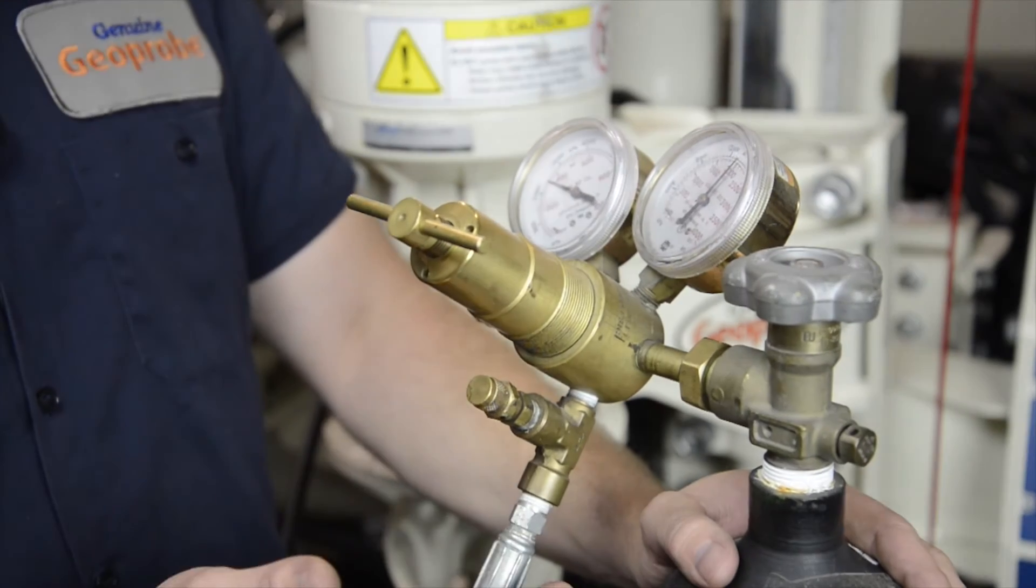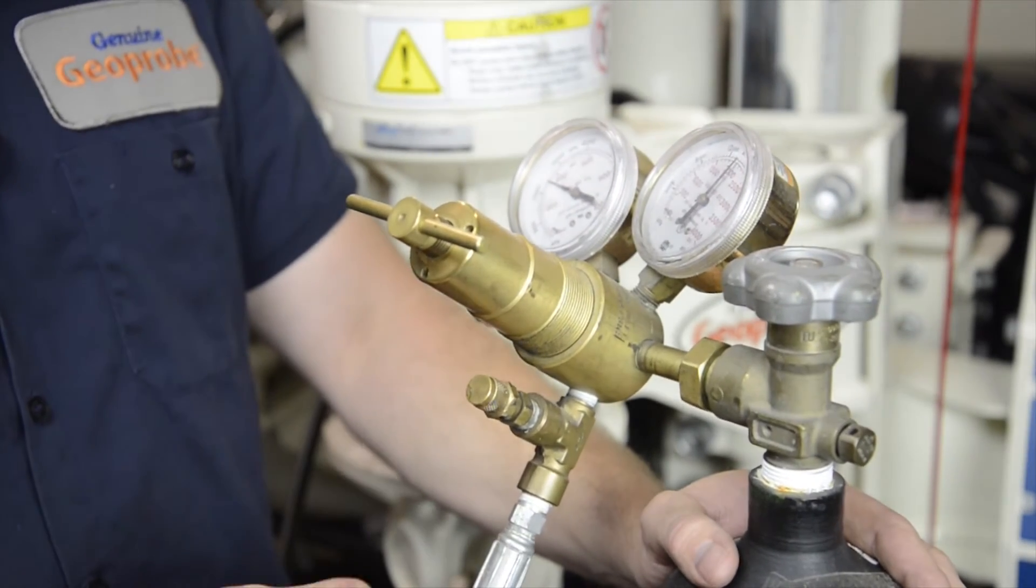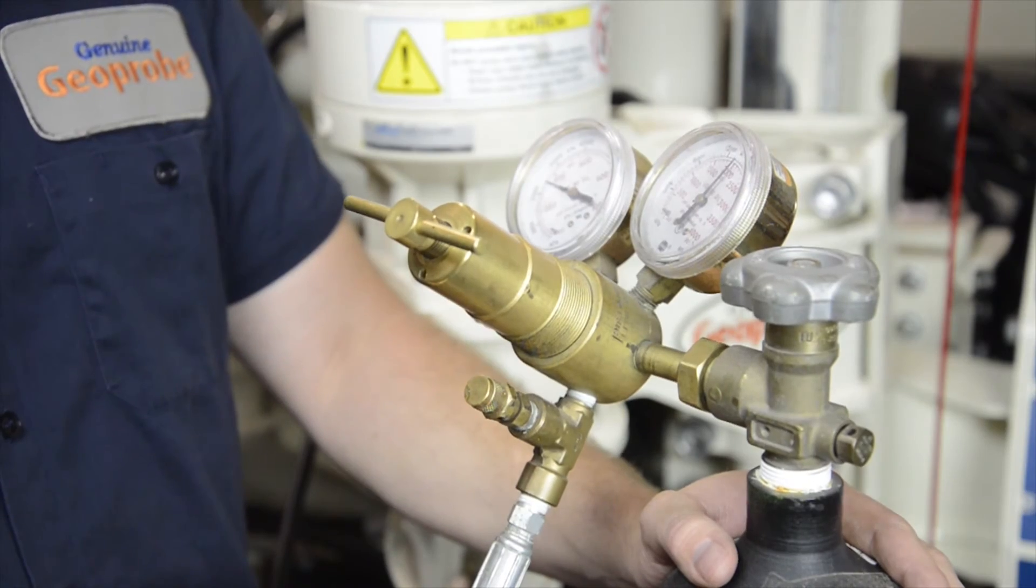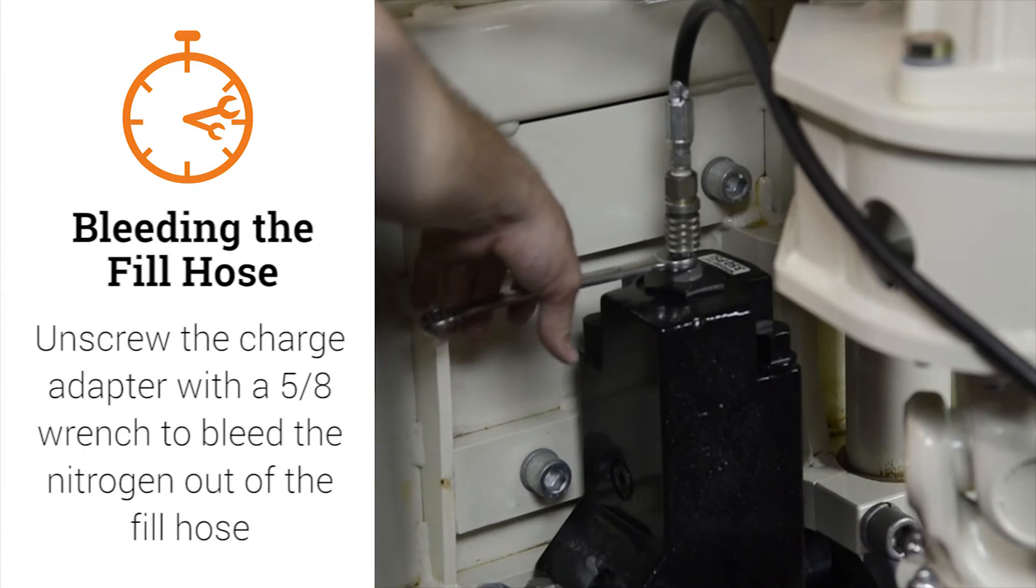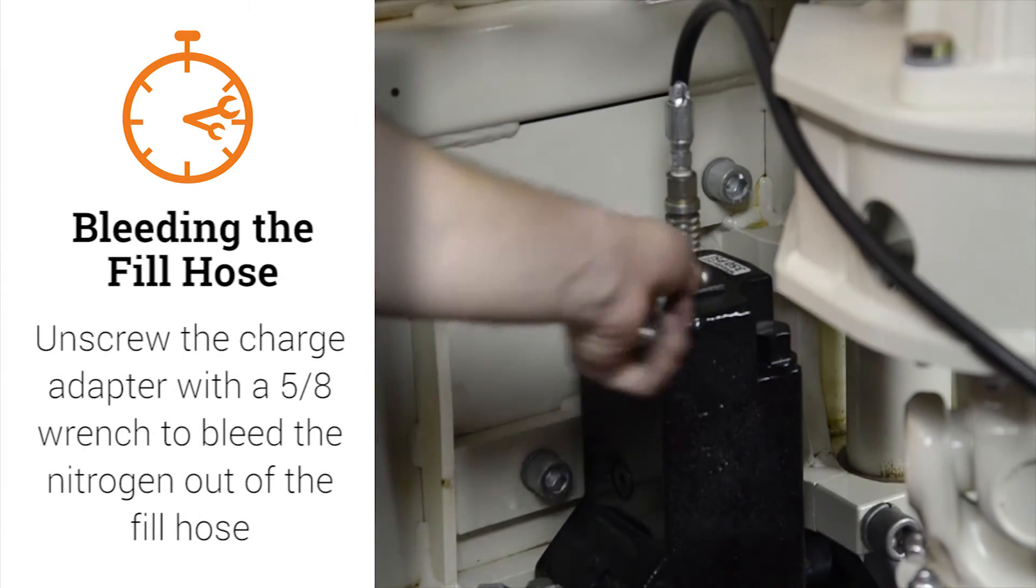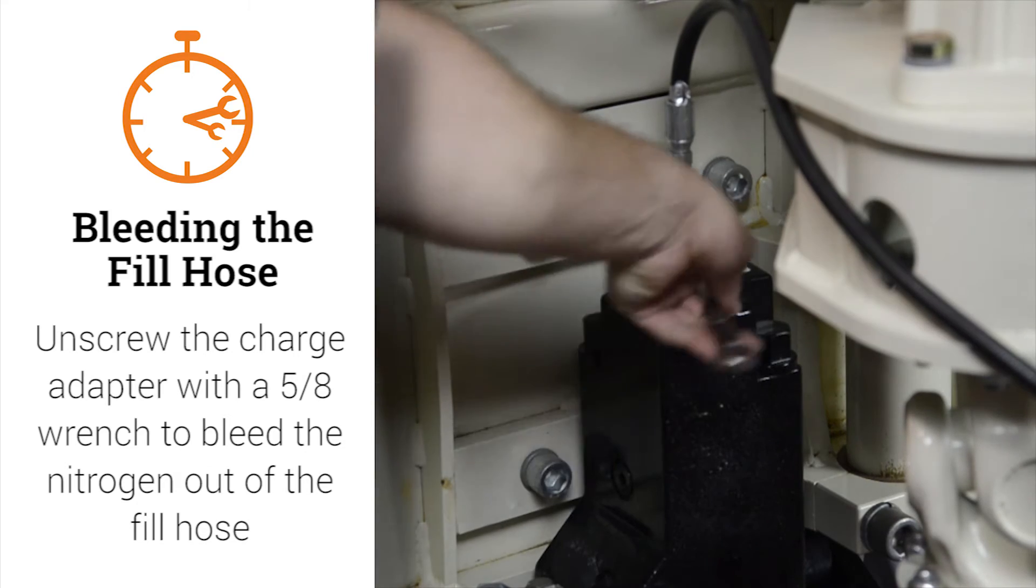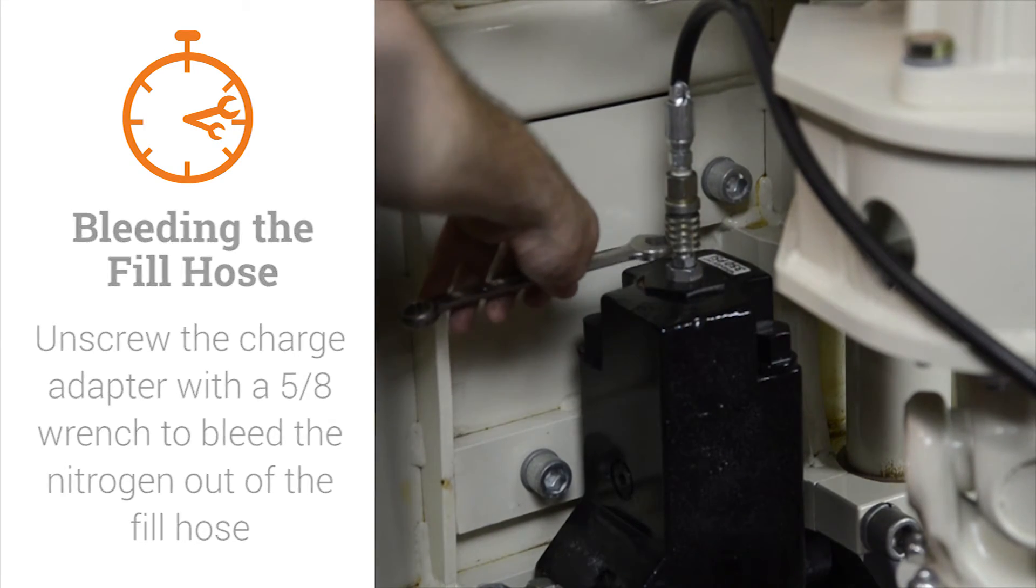Because not all regulators are the same, for the purpose of this demonstration, I will loosen the charge adapter. Simply take my 5/8ths wrench and unscrew the adapter while the quick connect is still attached. Make sure not to turn the charge valve on the hammer.